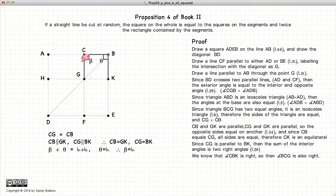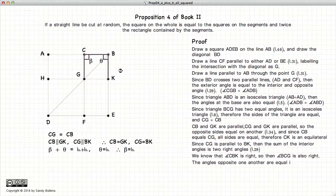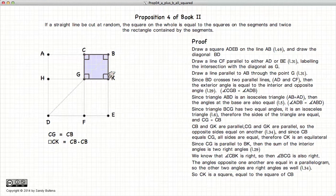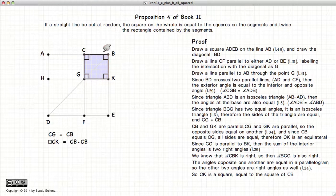The opposite angles on a parallelogram are equal. So all angles are right angles and all sides are equal. Therefore, CK is a square equal to CB times CB.